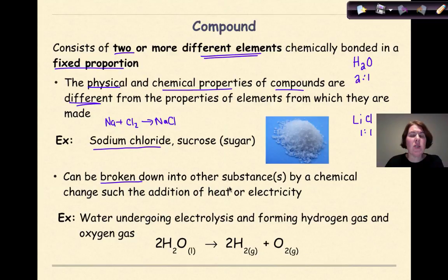Compounds can also be broken down into other substances by a chemical change, such as the addition of heat or electricity, which we know as electrolysis. So compounds most definitely can be broken down into simpler substances. A great example would be water. When water undergoes electrolysis it forms hydrogen gas and oxygen gas, and we can see that right here. So here's our water. We add electricity, and we can form hydrogen gas and oxygen gas through electrolysis. That's an example of a compound being broken down into its original elements.